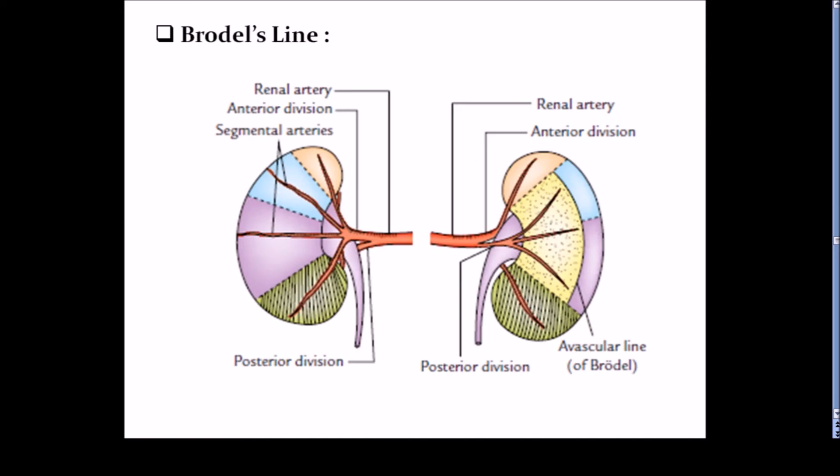Now Brodel's line: it is the junction between the area that is supplied by the anterior and posterior divisions of the renal artery. It is present on the posterior aspect of the kidney at the junction of medial two-thirds and lateral one-third. Clinically, this Brodel's line is important. It is the functional avascular plane between the posterior segment medially and the upper and middle segments laterally. So it is a suitable site for surgical incision to remove renal stones in nephrolithotomy.